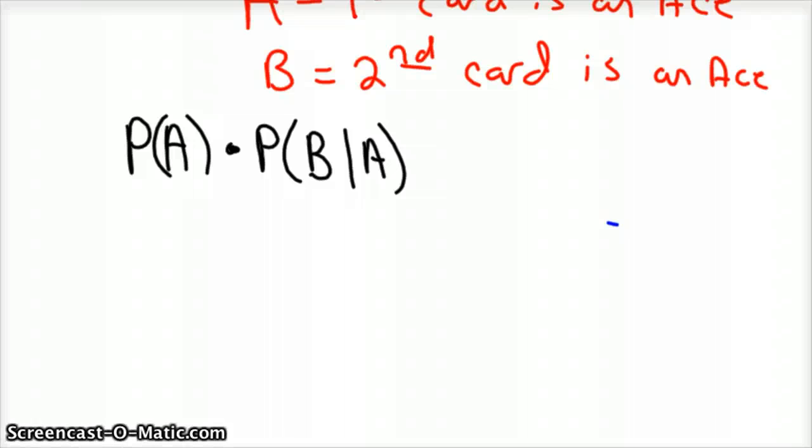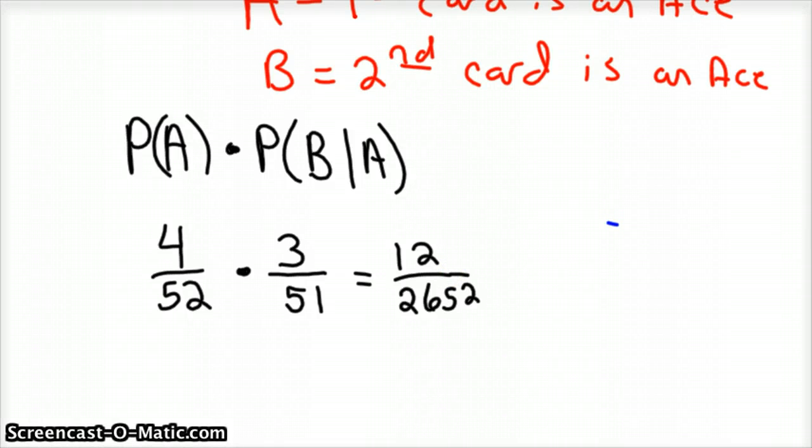And so the probability of the first card being an ace, there's four aces and 52 cards, and times the probability, so the probability that the second card is an ace, well, there's only three aces left in the deck because I have one in my hand. And so you could multiply that out just as is, it'd be easier to reduce it first, but you'd have 12 over 51 times 52. So it's 12 out of 2,652.